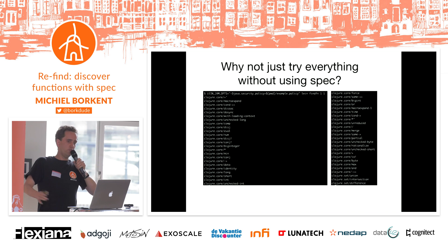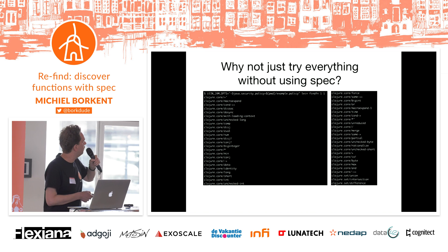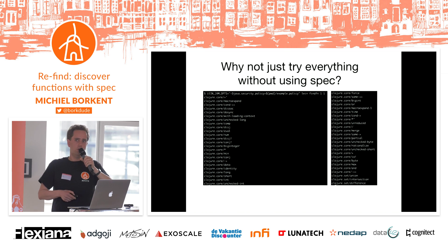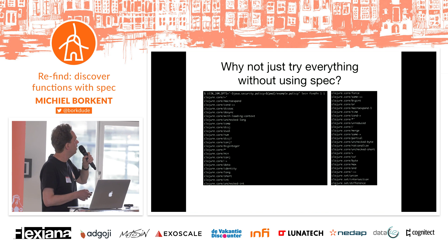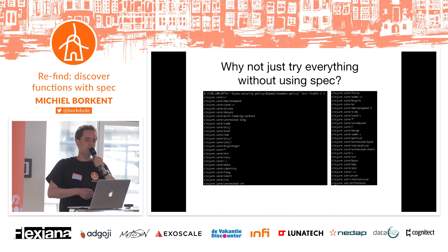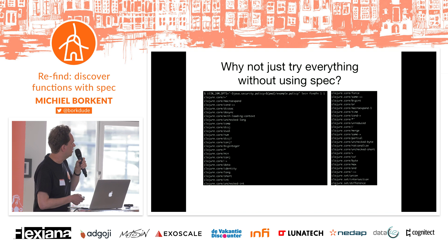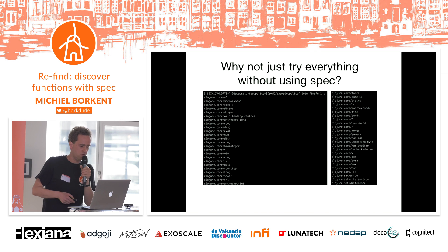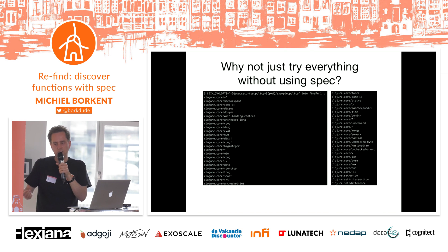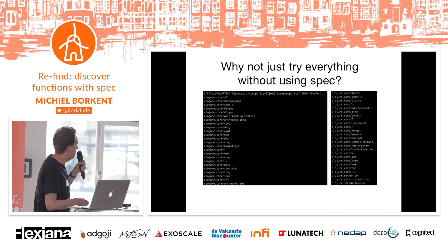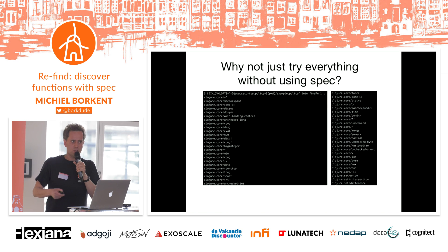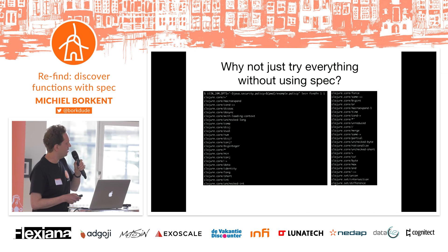So why not just try all the functions that we know without using spec? There is a tool called LineFindFun, made by someone who is unfortunately not alive anymore. It was a very nice tool. You could give it an input and output argument, just like ReFind, and it would enumerate all the functions that just matched. But a lot of functions in Clojure return just by accident the first argument you gave if you call them with just one argument. For example, you see conch here — but would you recommend calling conch on a number to a beginning Clojure developer? No.